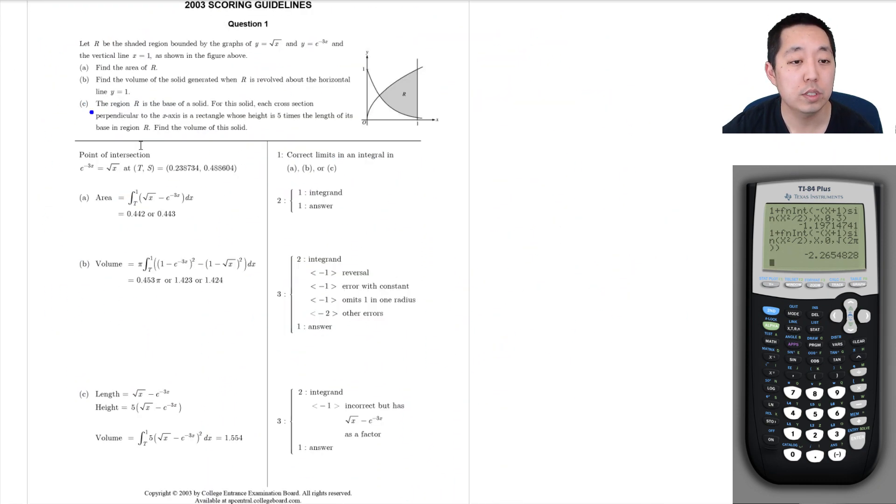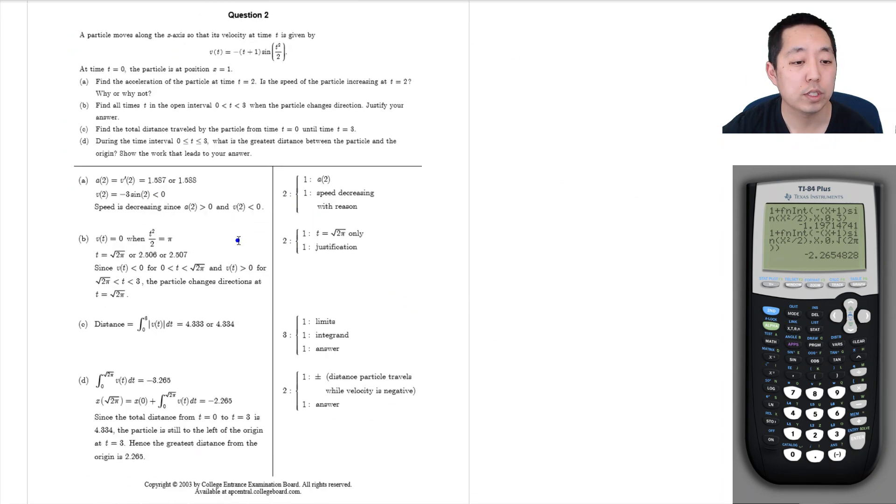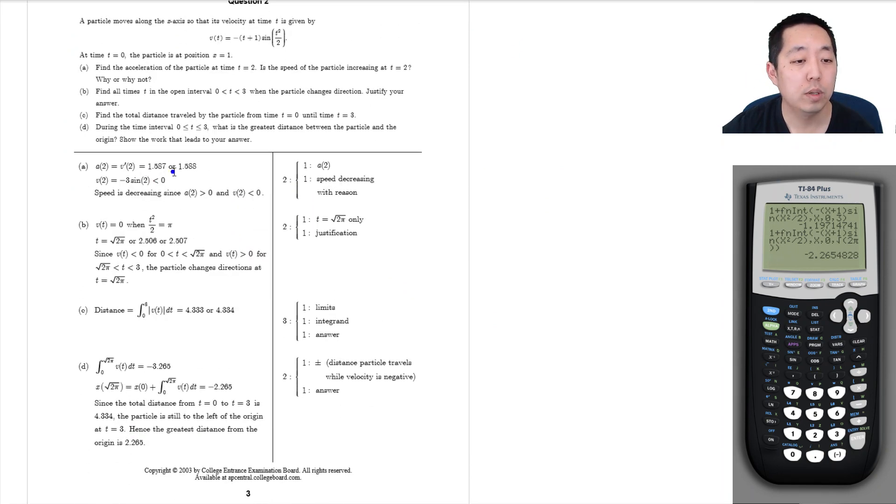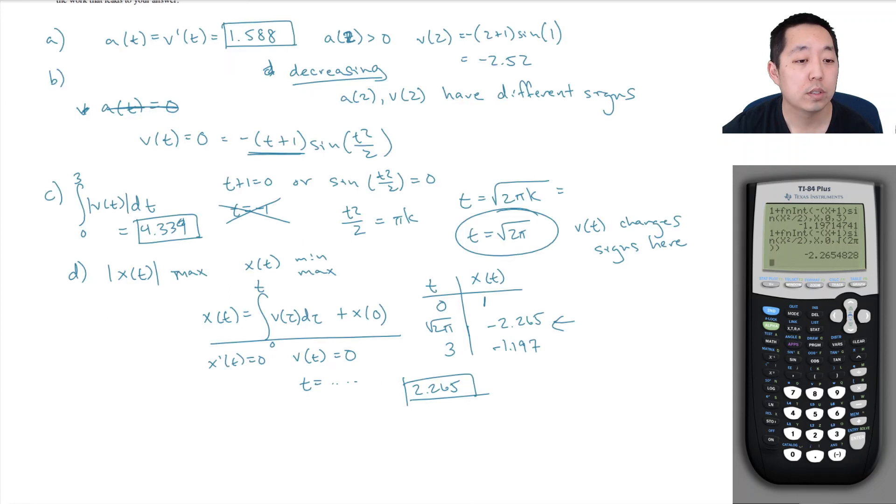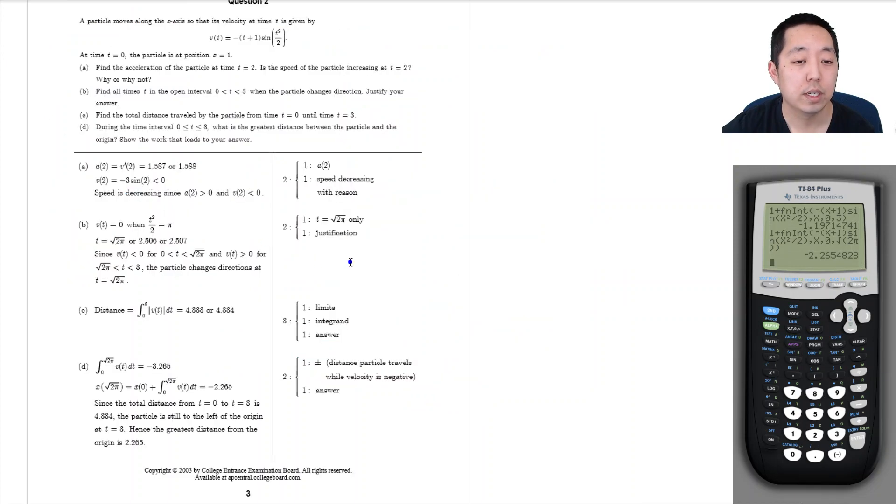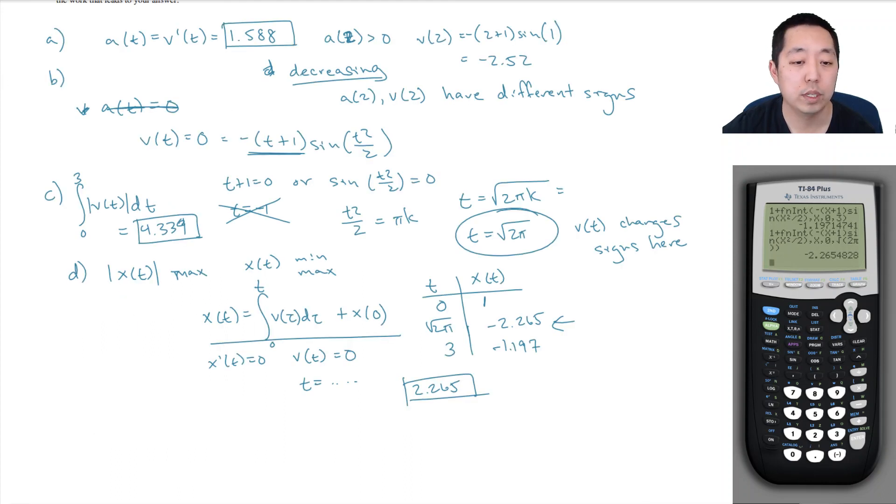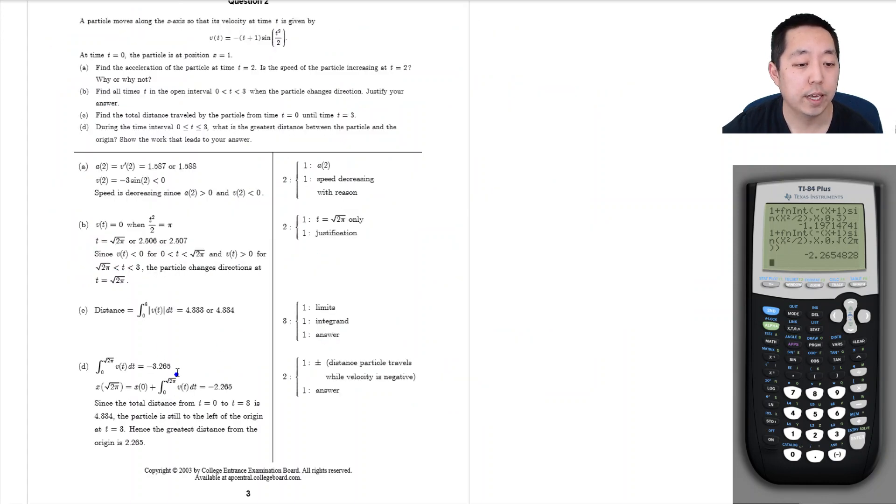So let's look at the solutions and see how we did. Question 2: 1.587 and it's decreasing. So we got 1.588 and it's decreasing. That's good. And then they got square root of 2 pi. Particle changes direction at square root of 2 pi. They got 4.333. What did I get? 4.334. And then the distance, hence the greatest distance from origin is 2.265.